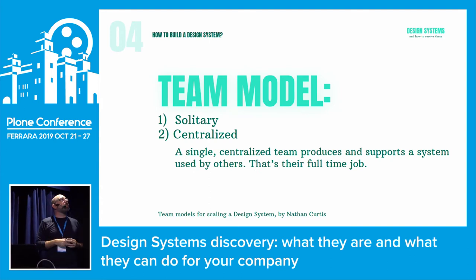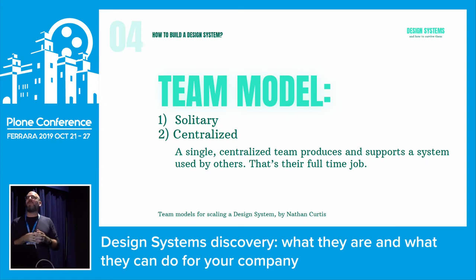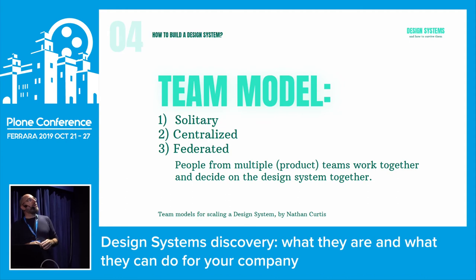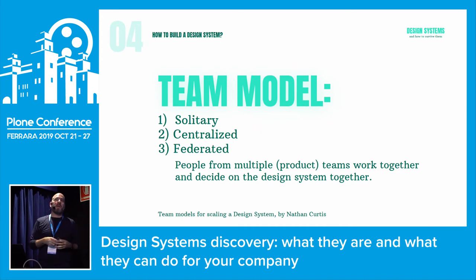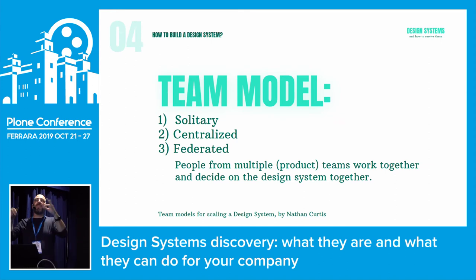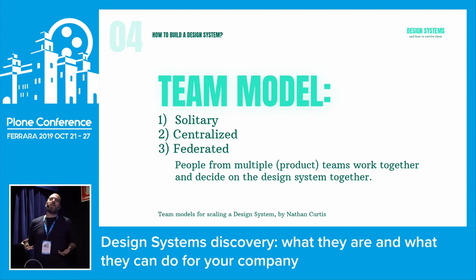Then there's the centralized team model — a team whose job is to design and maintain the design system for the whole organization and for other teams. And then we have the federated team model, where people from multiple product teams inside the organization work together to build the best design system possible, bringing experience from different parts of the company. That's the best thing, because you've got ideas, feedback, and all the things you need.